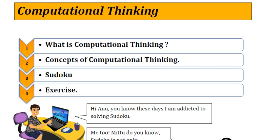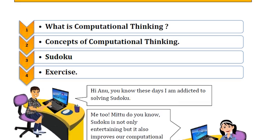So, what is computational thinking? Computational thinking is a problem solving process or a set of problem solving methods. It is looking at a problem in a way that a computer can help us to solve it. For example, to make a game in Scratch, how do we start? By planning the game, by planning the sprites and the levels and then writing the script. The thinking that is undertaken before starting work on the computer is known as computational thinking.